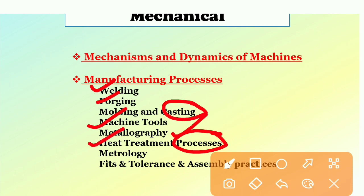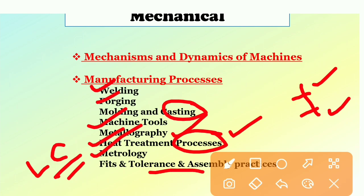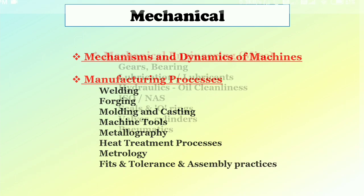Metallography, heat treatment processes like there is quenching, there is annealing, there are various processes so you need to know the process, name of the process, what is the basic definition of the process. Metrology again upper limit, lower limit are there. Simple metrology some tools of measurements are there, vernier caliper, least count of vernier caliper, these sort of the things. Fits, tolerance and assembly very important.